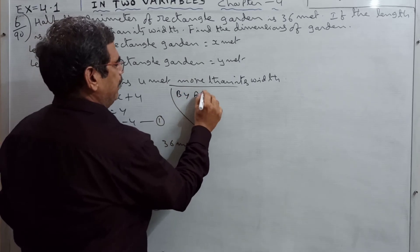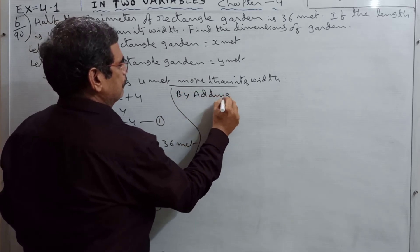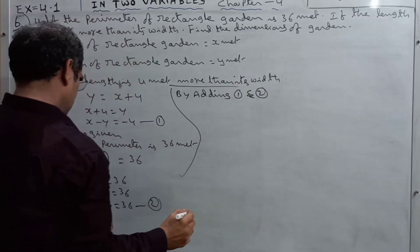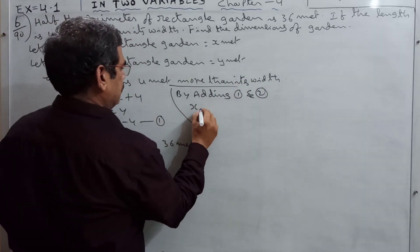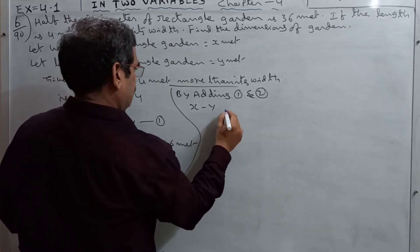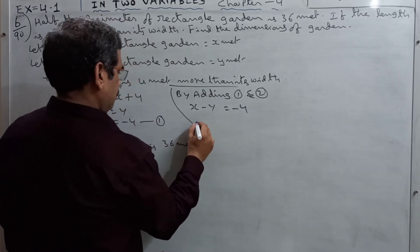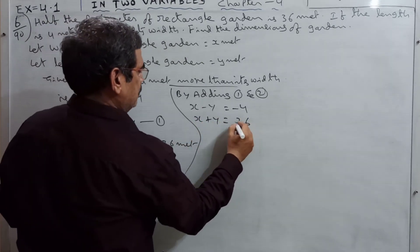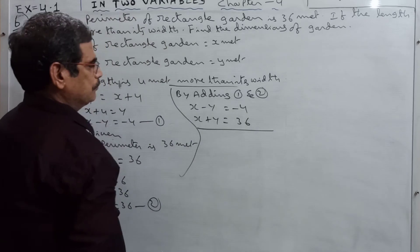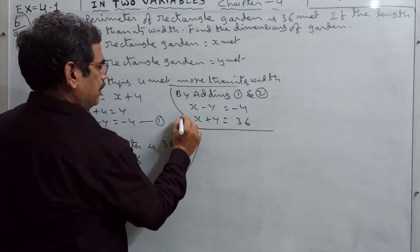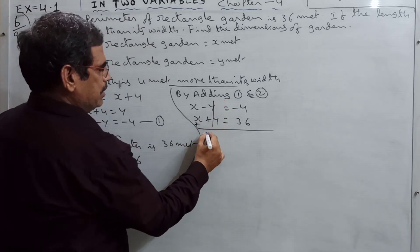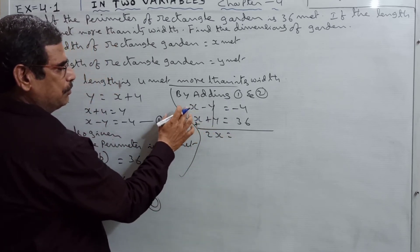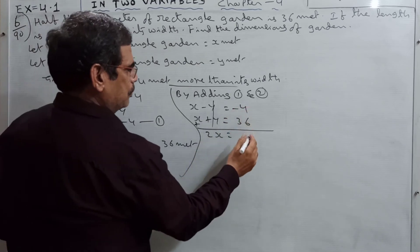By adding 1 and 2: x minus y equals minus 4, x plus y equals 36. Add them - plus y minus y cancel. 2x is equal to minus 4 plus 36, which is 32. So 2x equals 32.